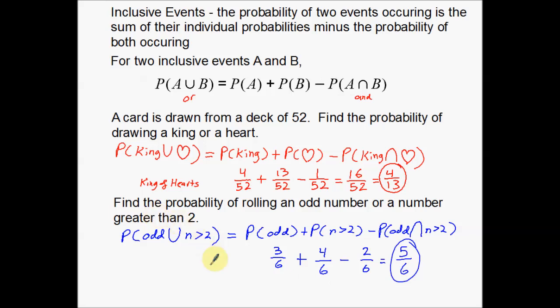And that's all I have for inclusive events. Remember, inclusive events are events that have a little bit of crossover. For the king or heart example, the king of hearts was the crossover. For the number cube, rolling odd or greater than 2, the numbers 3 and 5 were in both categories. That's your little bit of crossover. Thank you so much for watching — hope you enjoyed the video, and we'll see you next time!